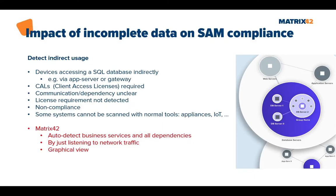Another impact of incomplete data is related to indirect usage. It is hard to track when devices access a SQL database indirectly — for example, via an app server or gateway. An iPad, smartphone, or Windows system connects to a web server, which connects to an application server, which connects to a database. In this case, a device CAL is required for the database for each end device. If these dependencies are not clear, license requirements go undetected and you have non-compliance.